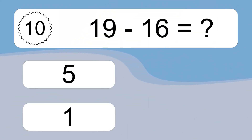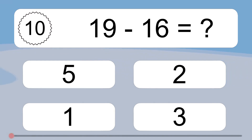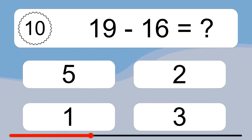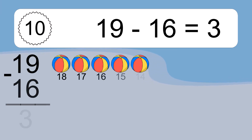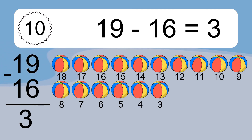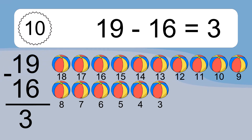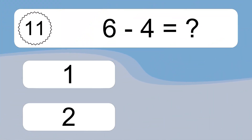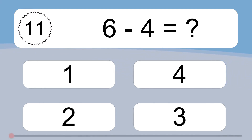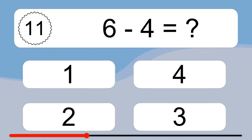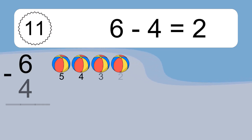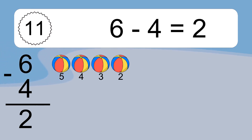19 minus 16 equals what? 19 minus 16 equals 3. Let's count it: 18, 17, 16, 15, 14, 13, 12, 11, 10, 9, 8, 7, 6, 5, 4, 3.